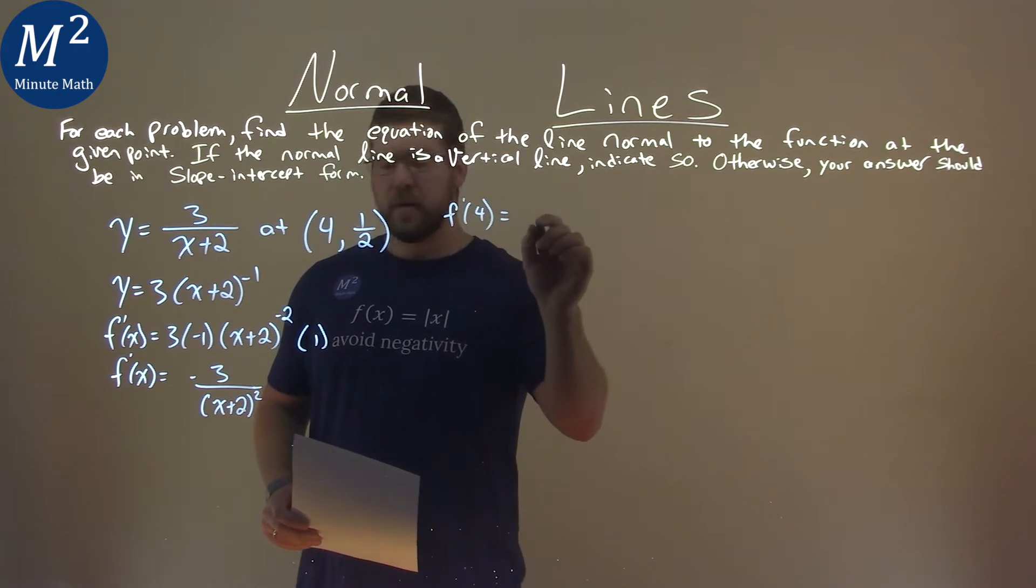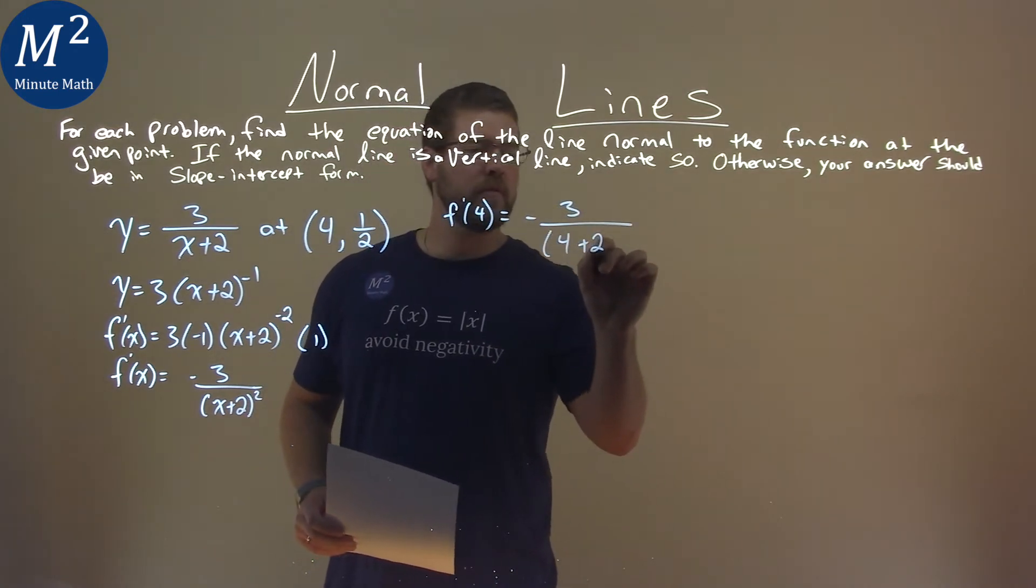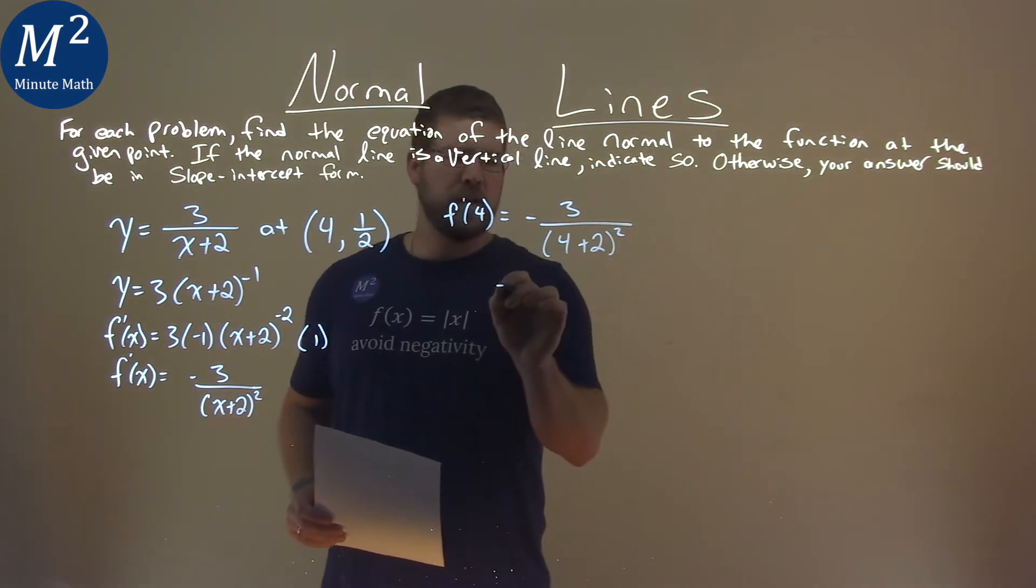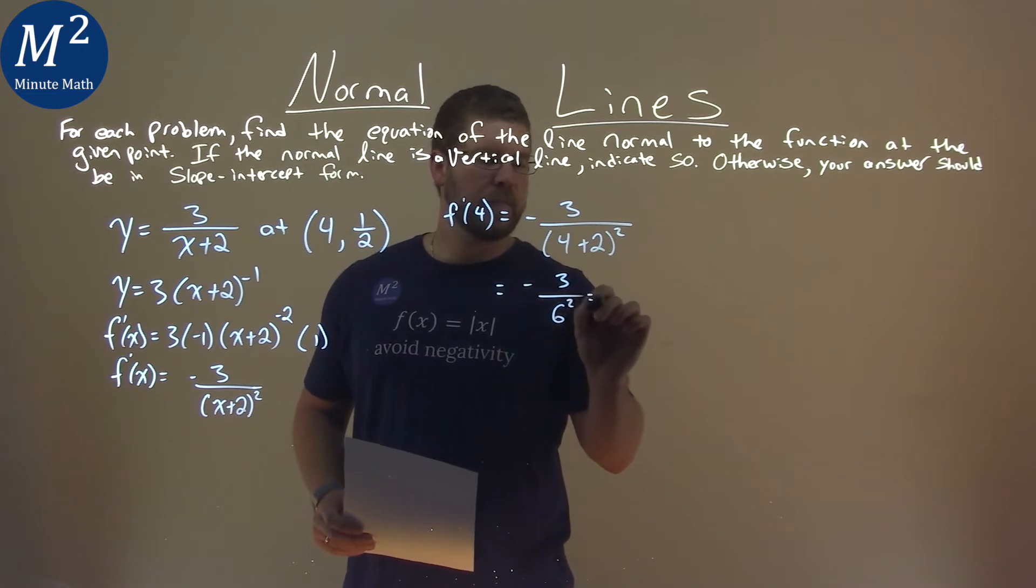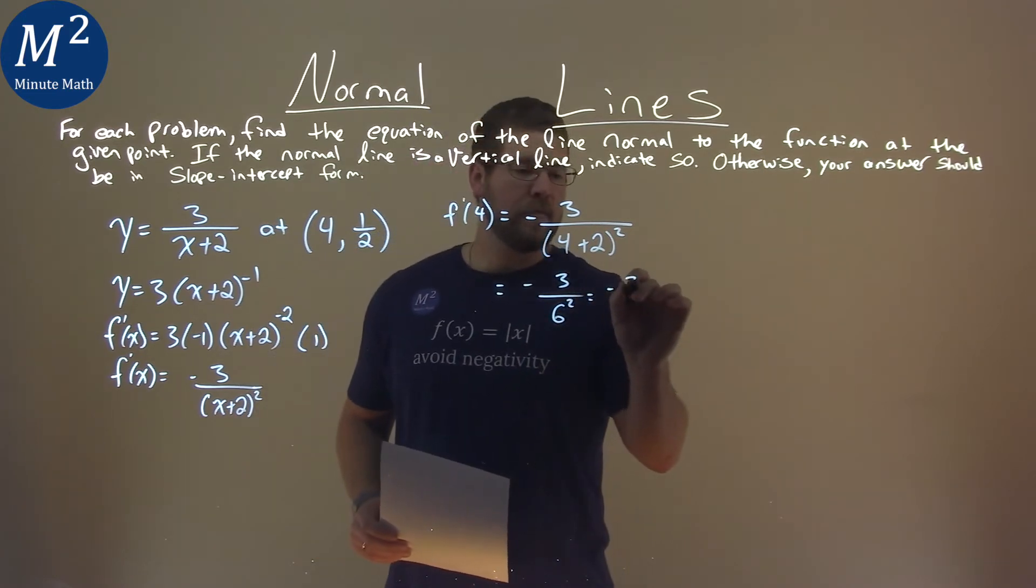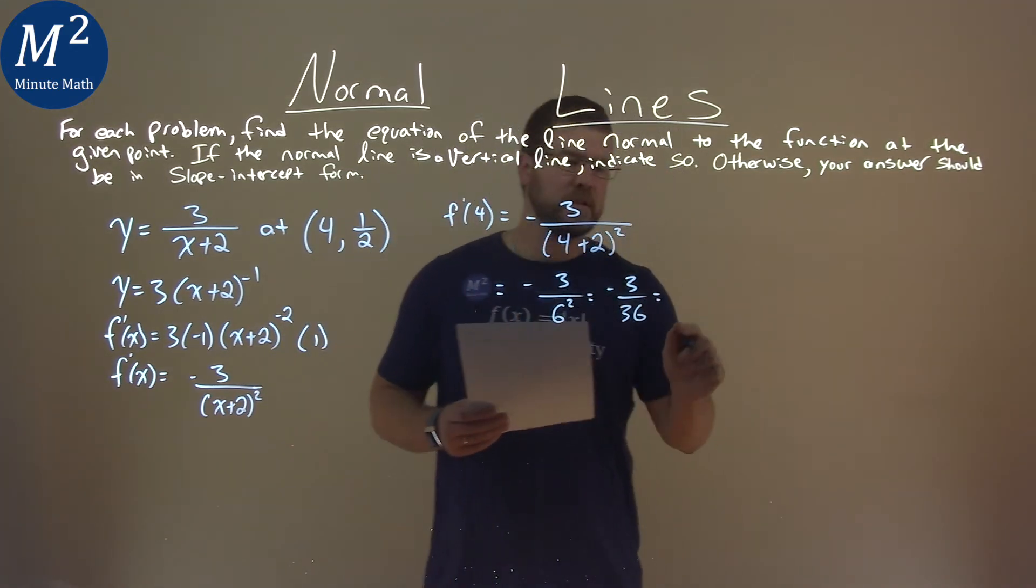f prime of 4 is equal to negative 3 over 4 plus 2 squared. Simplify this down a little bit, negative 3 over 4 plus 2 is 6 squared. Well, we have now negative 3 over 6 squared is 36, and that simplifies to be negative 1 over 12.